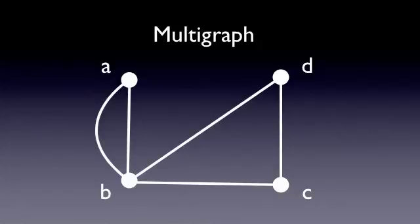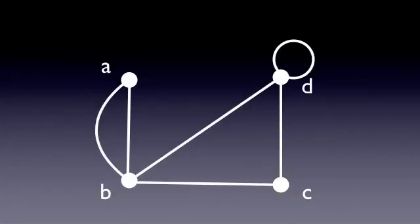Now let's go ahead and add a loop. We have an edge that simply loops back onto the same vertex from where it started, making a circle. Notice that this edge only connects to a single vertex. We call this kind of graph a pseudograph.